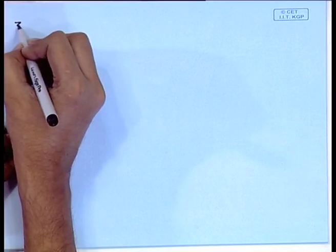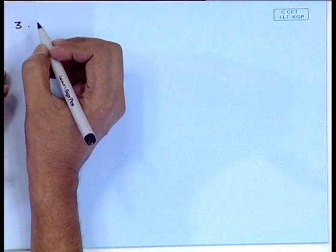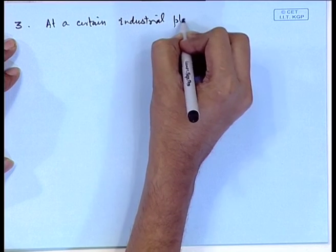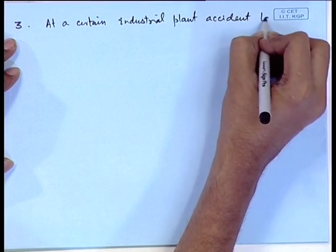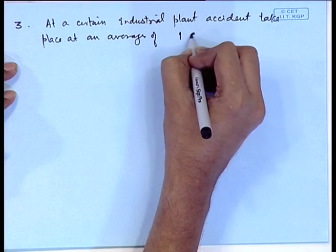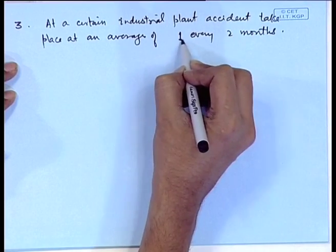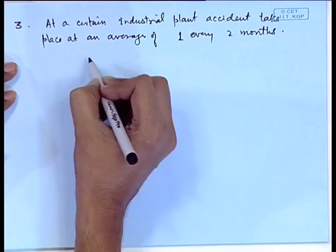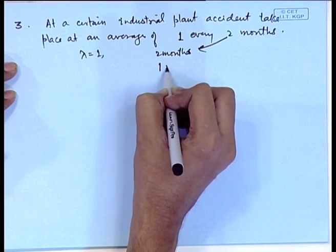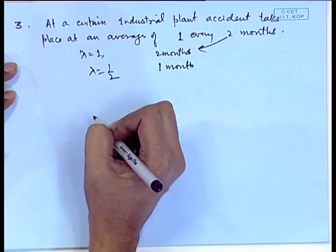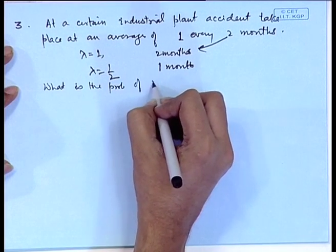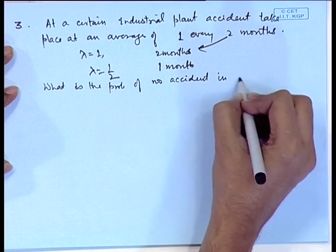Let me take one more example. At a certain industrial plant, accidents take place at an average of 1 every 2 months. So the rate is 1 accident per 2 months. If we consider λ=1 with unit of time as 2 months, then if we consider unit as 1 month, λ becomes 1/2. What is the probability of no accident in a given month?